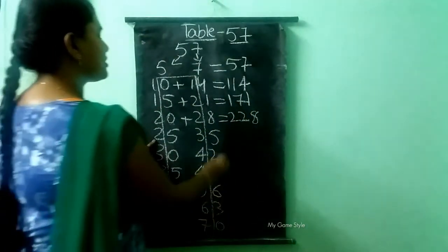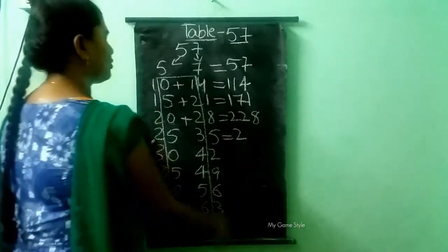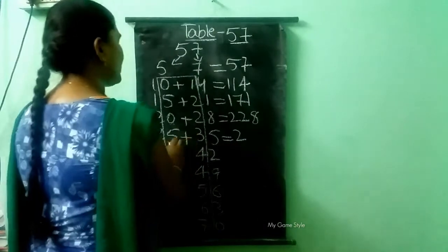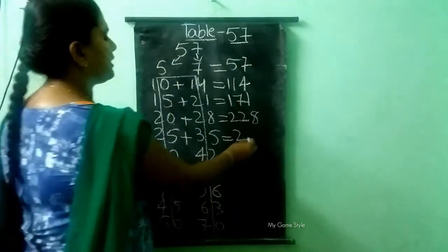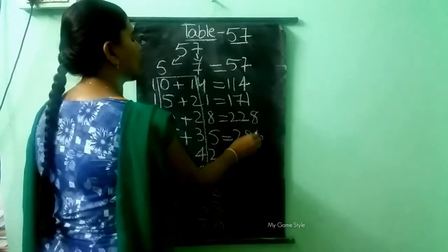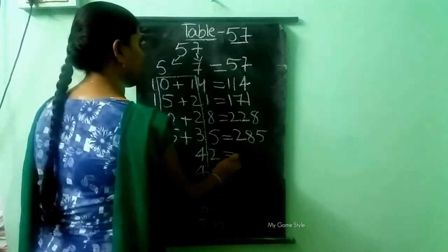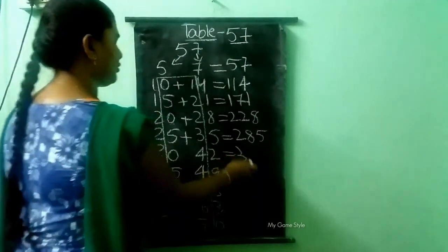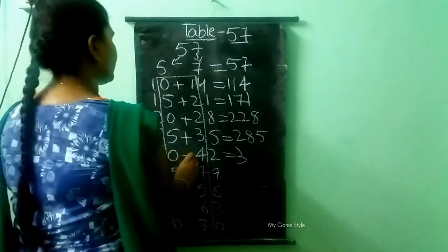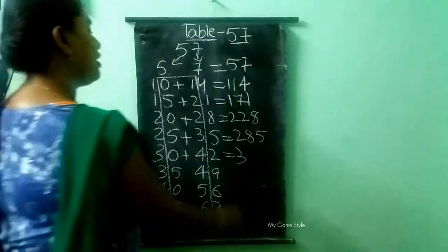Here it is 2, so I am writing 2 as it is. Then 5 plus 3 — how much, children? 8. Here 5 is there, so I am writing 5 as it is. Here it is 3, so we need to write 3 as it is. Then 0 plus 4 — how much, children? 4.